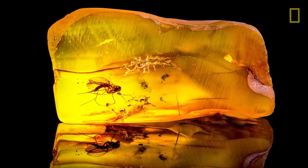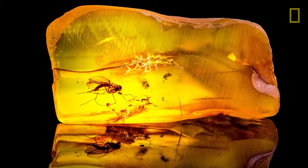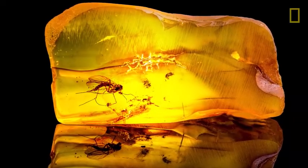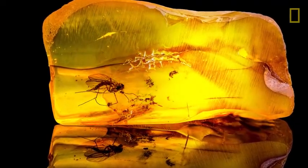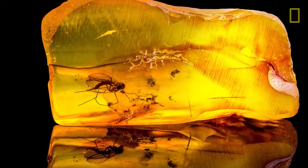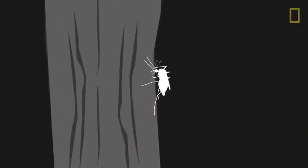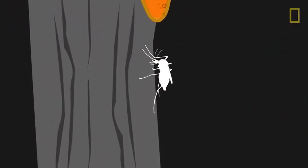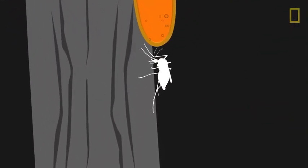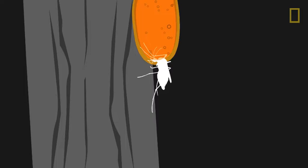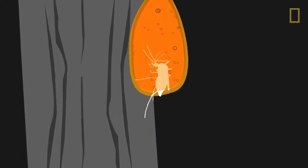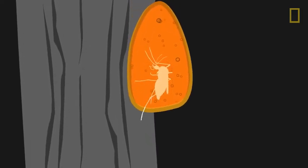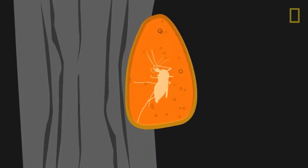One special case involves trapping organisms, oftentimes insects, in amber. This process begins when an organism is covered in tree sap. The sap, or resin, forms a protective seal around the entrapped organism.